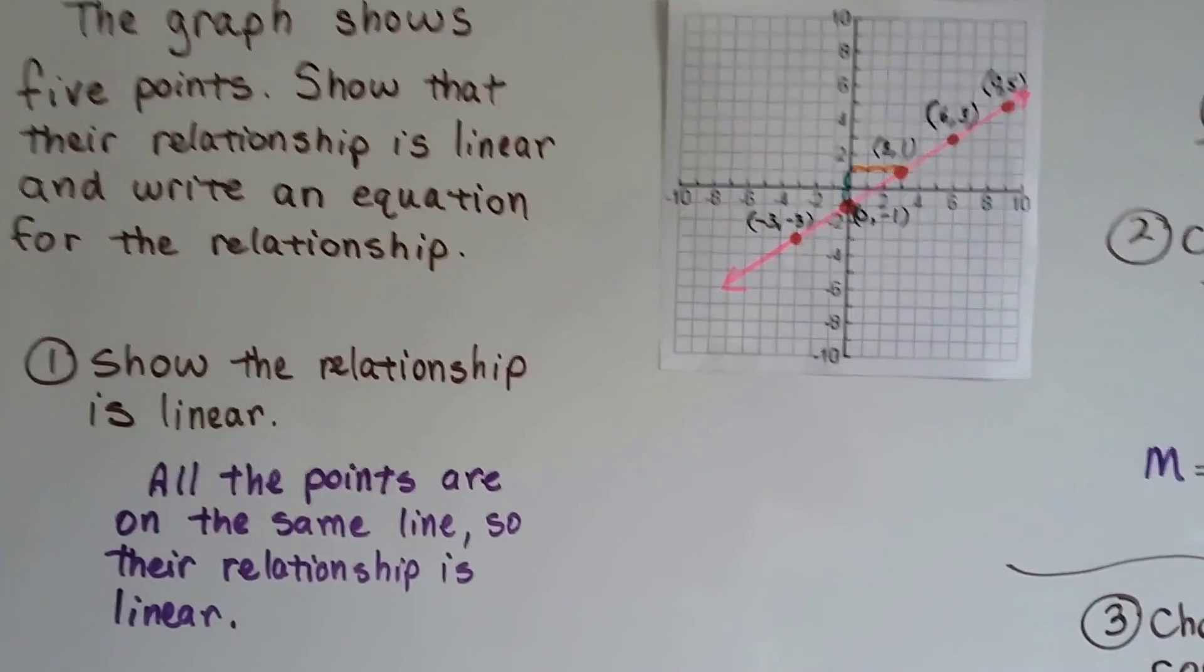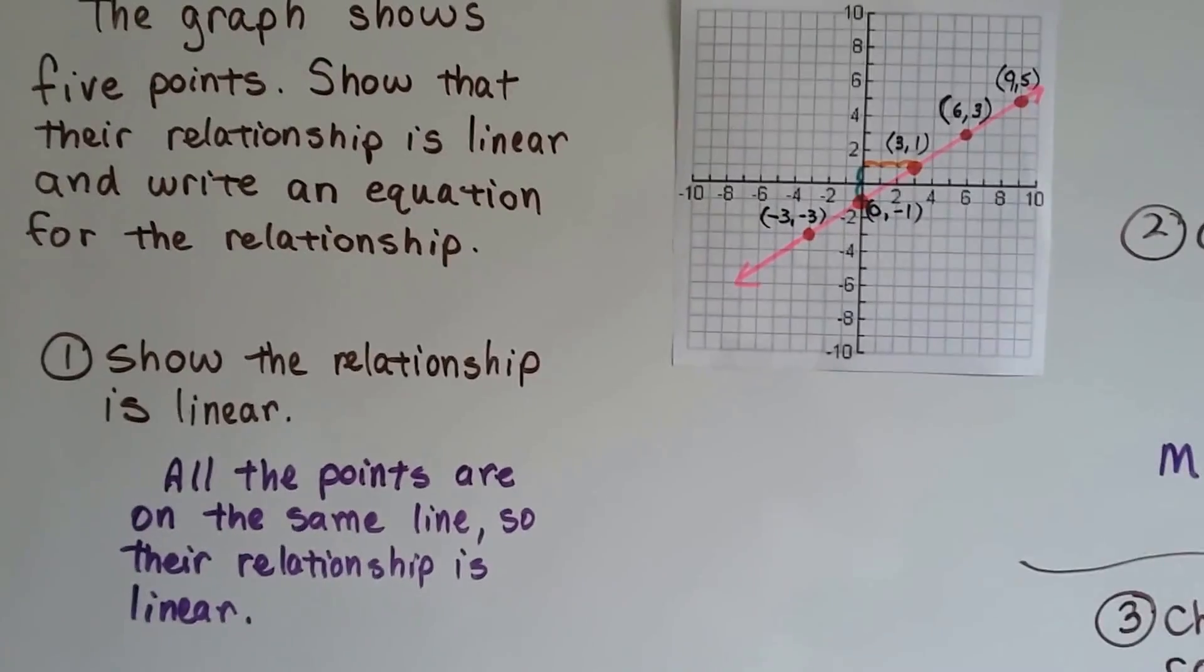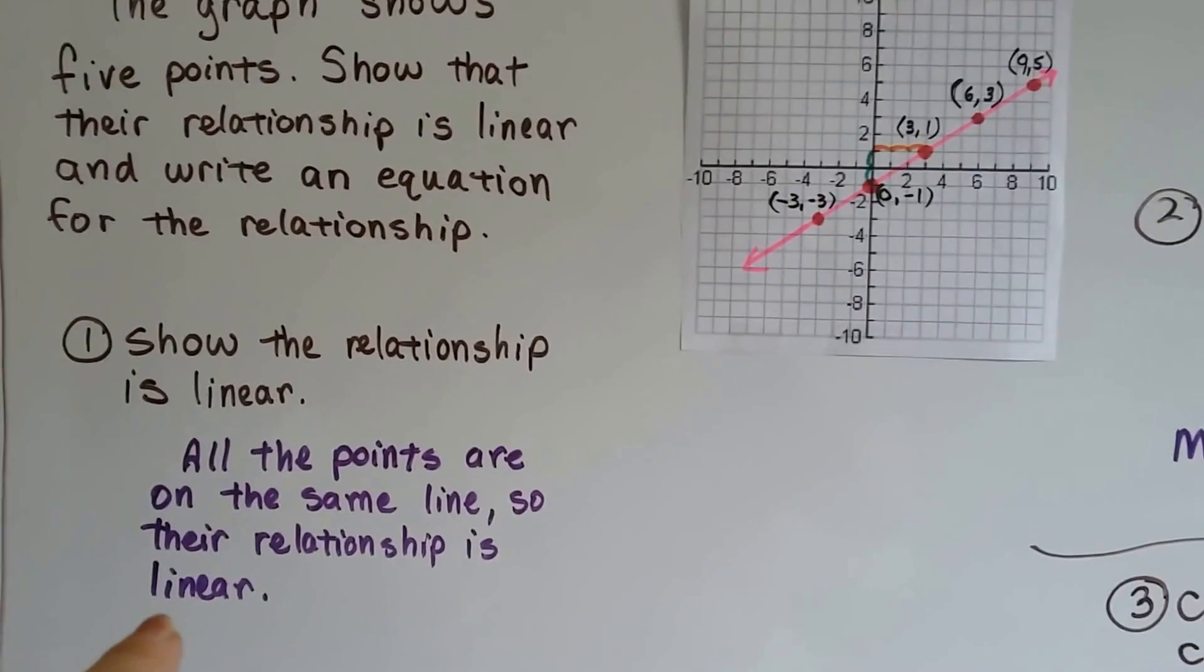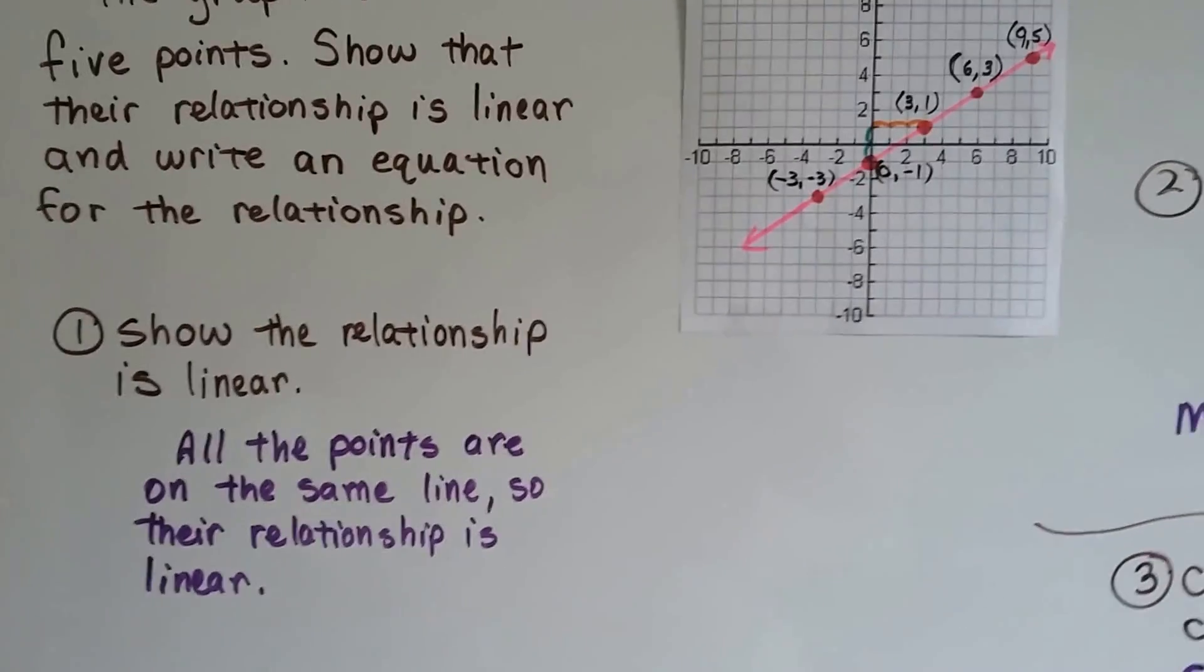All the points are on the same line, so the relationship is linear. You can even see the word line in the word linear.